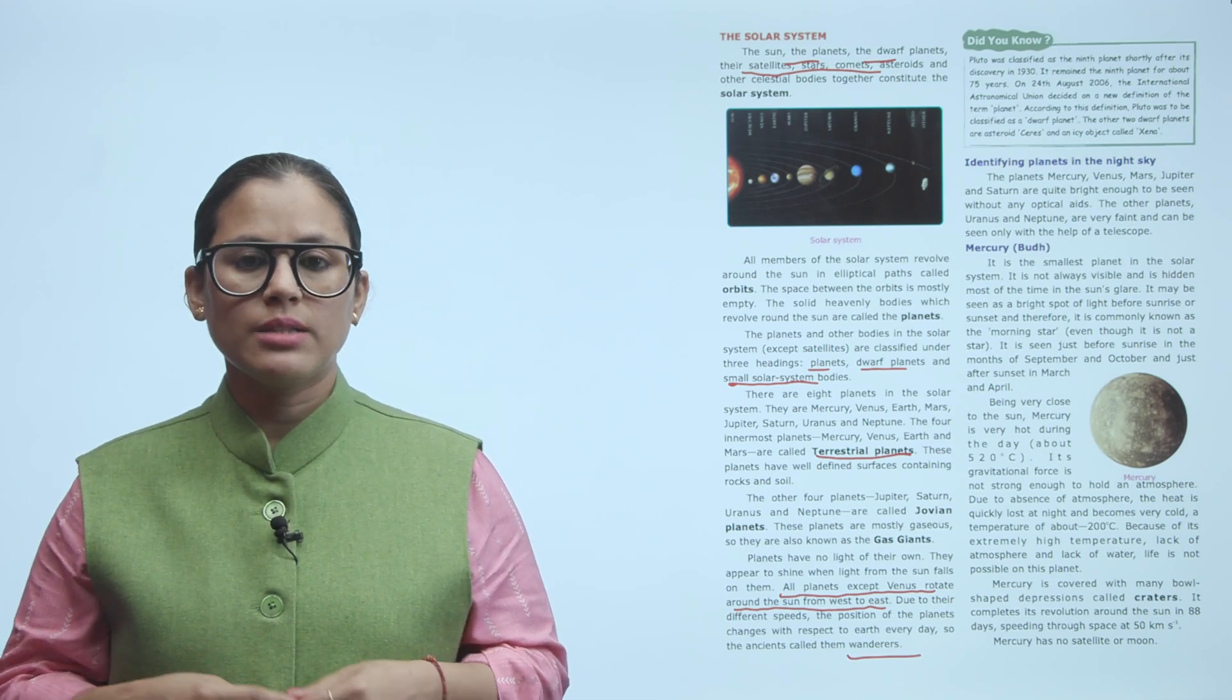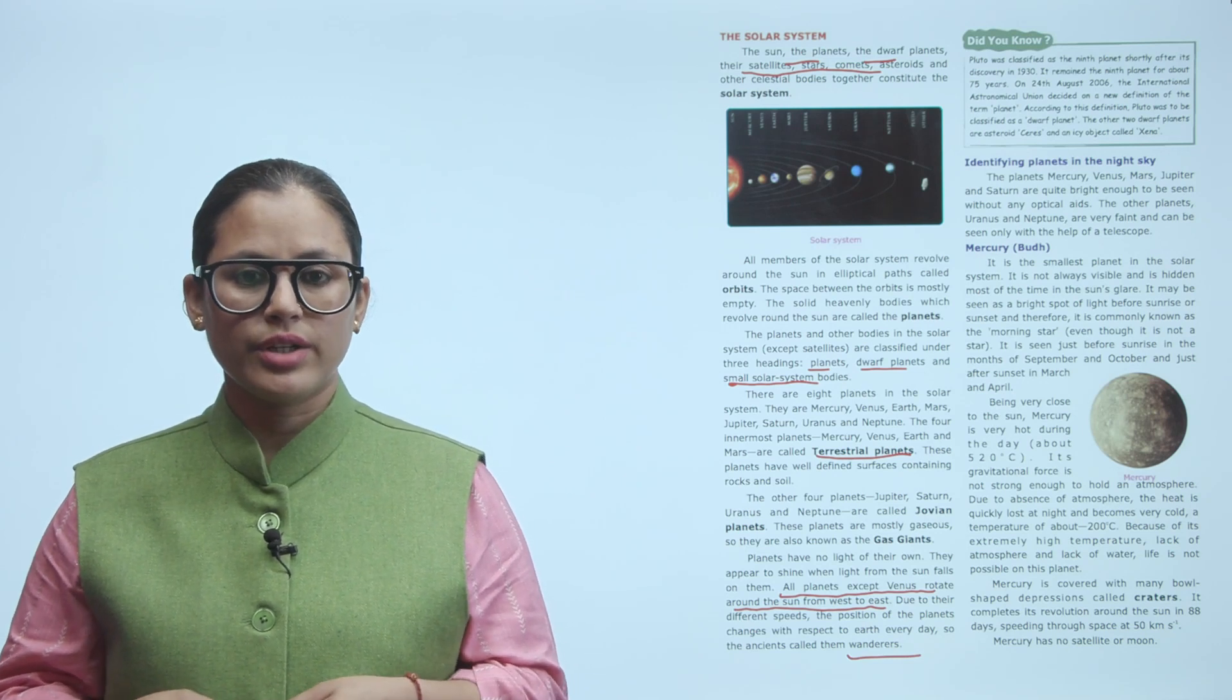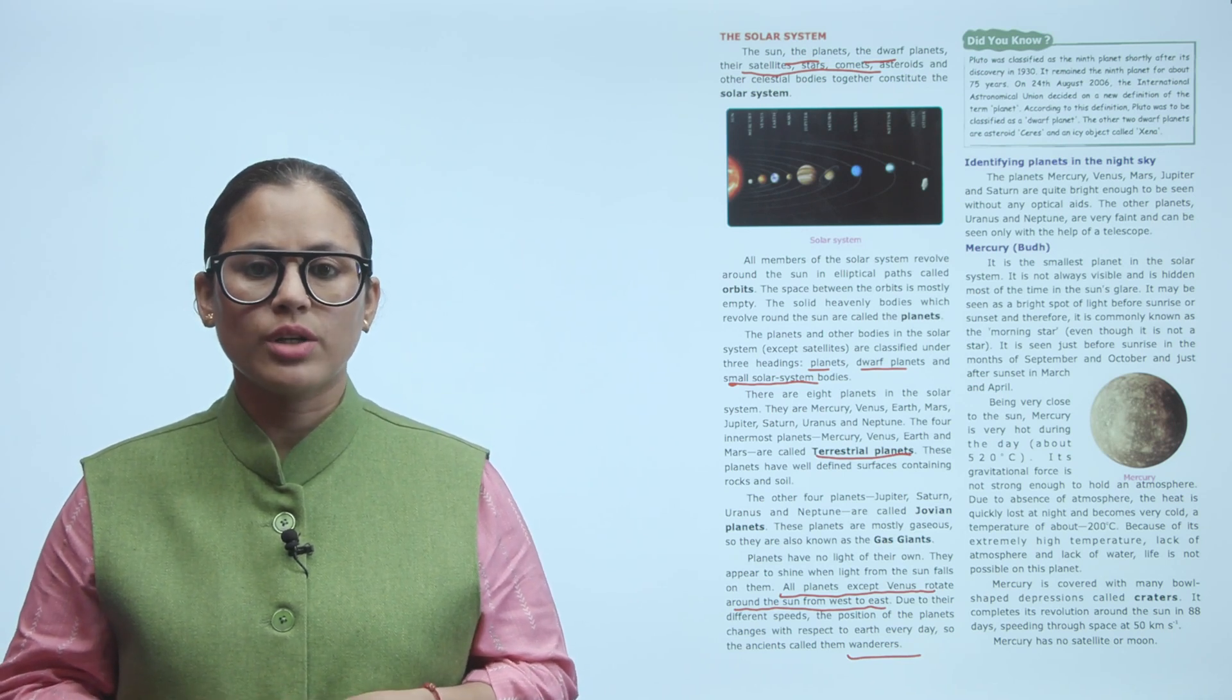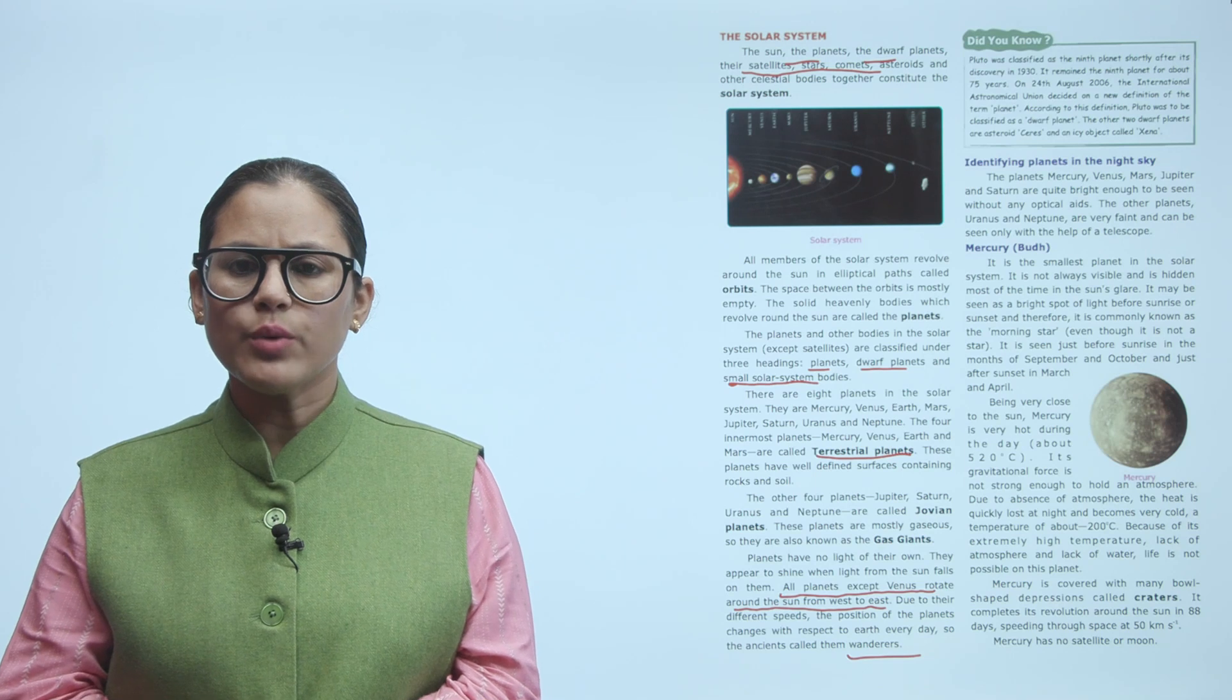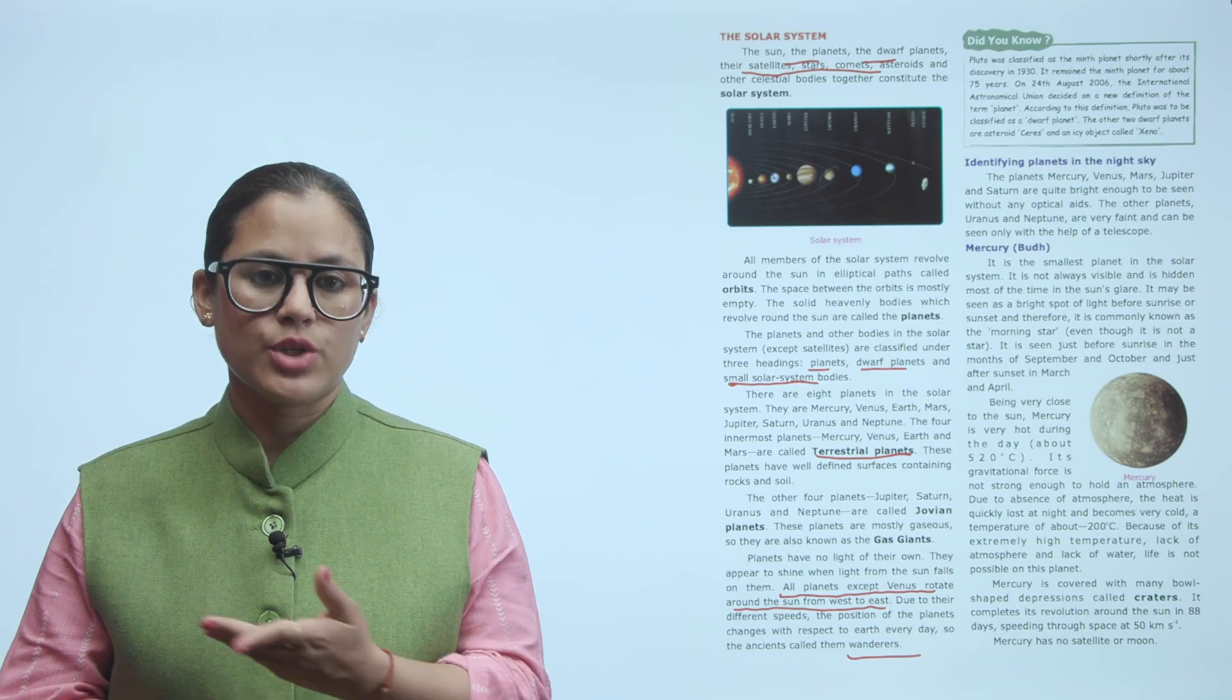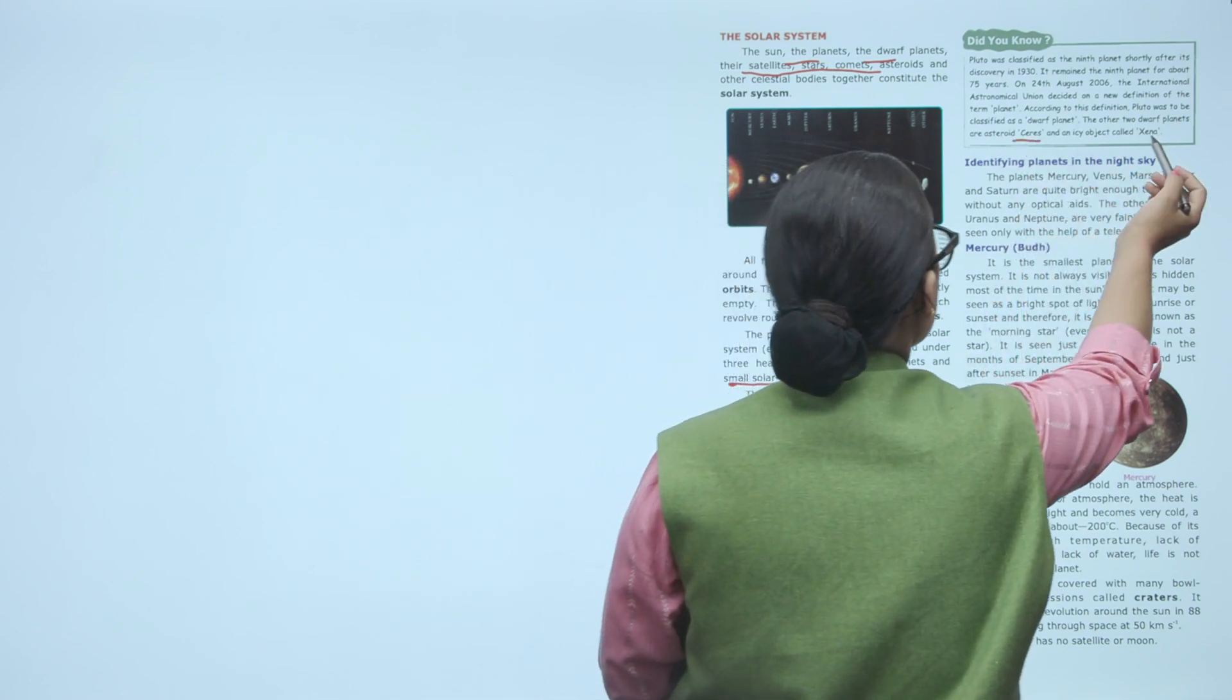Did you know: Pluto was classified as the ninth planet shortly after its discovery in 1930. It remained the ninth planet for about 75 years. On 24 August 2006, the International Astronomical Union decided on a new definition of the term planet. According to this definition, Pluto was to be classified as a dwarf planet. The other two dwarf planets are asteroid Ceres and an icy object called Eris.